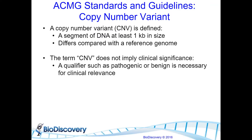ACMG has defined a copy number variant as a segment of DNA that is at least one kilobase in size that differs compared to a reference genome. The term CNV itself does not imply clinical significance. We need to qualify it as pathogenic, benign, likely benign, likely pathogenic, or of unknown significance for clinical relevance. We need to use both of these metrics to assess copy number variation in an individual.